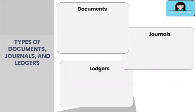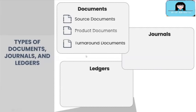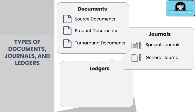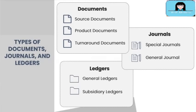There are several types of documents, journals, and ledgers. For documents we have source documents, product documents, and turnaround documents. Journals are divided into special journals and the general journal. Ledgers have two types: general ledgers and subsidiary ledgers. Let us discuss this starting with the documents.